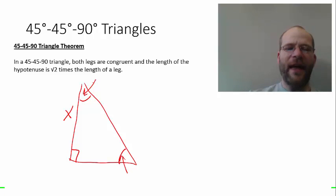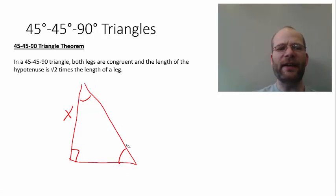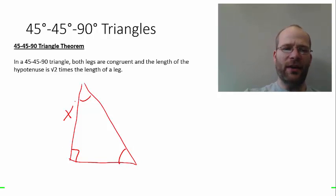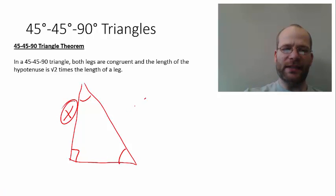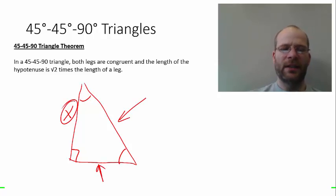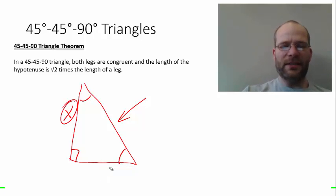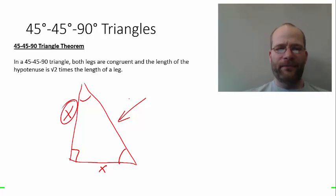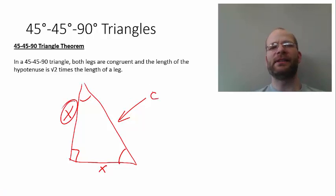Notice that if these two angles are congruent, then they have to be 45 degrees each since the right angle is 90. So we have a 45-45-90 triangle, and if one leg is x, how long are the other two sides? The second leg at the bottom is also x — it has to be x. What about the hypotenuse? I'll call that c for a moment.